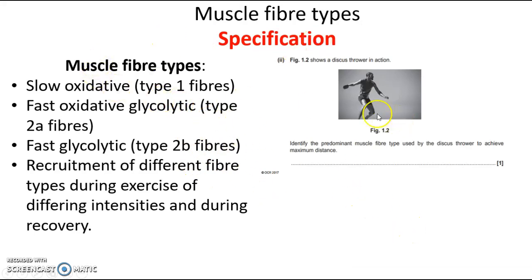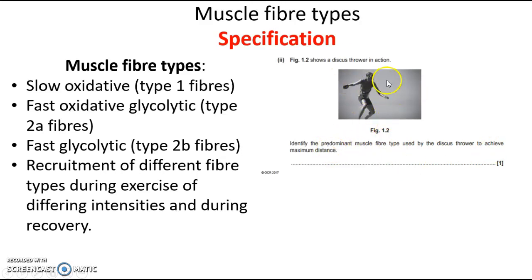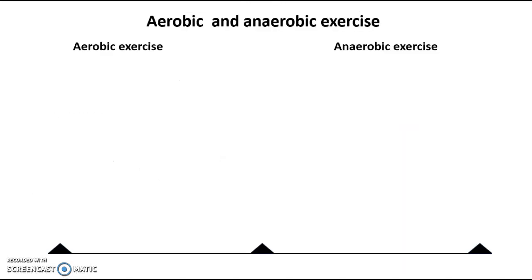You could get an example scenario in the exam — a picture of a sporting activity, in this case a discus. The type of thing you'd have to do is, by your knowledge of a discus thrower, identify the predominant muscle fibre type used to achieve maximum distance. You'll have to know which fibre type from the three will be used for someone doing a high intensity, low duration movement such as a discus. After the next couple of slides, you will feel more confident on that.